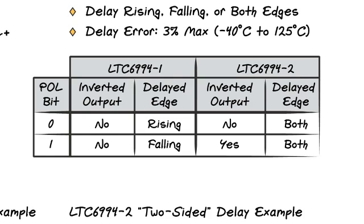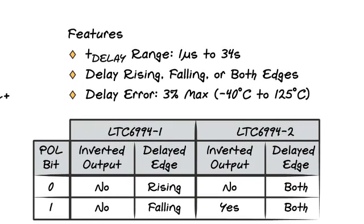but the polarity of the output, inverted or not inverted, is selectable again by the div pin's A-to-D. Each part has a programmable range of 1 microsecond to 34 seconds, and a maximum error of 3%.